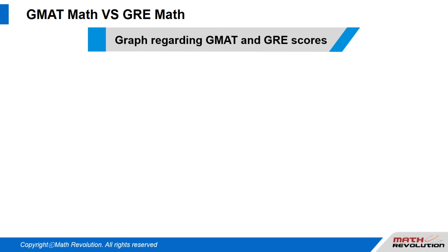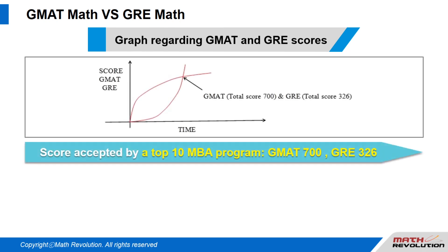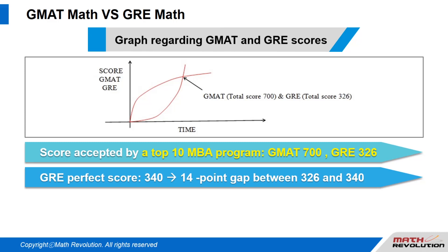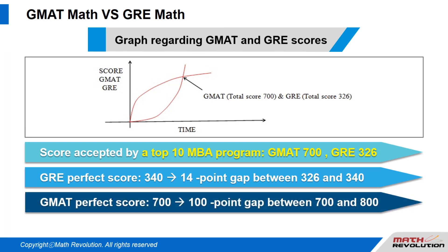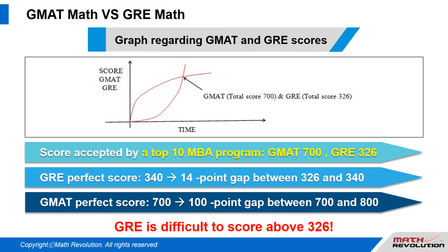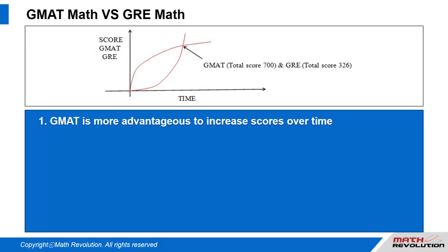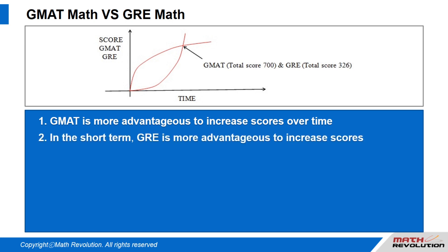Looking at the graph regarding GMAT and GRE scores: you will likely be accepted by a top 10 MBA program if you score above 700 on the GMAT and 326 on the GRE. In the GRE, there is only a 14-point gap between 326 and the perfect score of 340. However, in GMAT, there is a 100-point gap between 700 and the perfect score of 800. That's why it is difficult to score above 326 on the GRE. The GMAT is relatively more advantageous to increase scores over time, while in the short term, the GRE is more advantageous to increase scores.